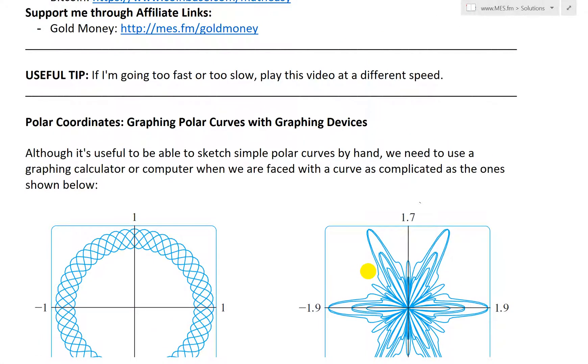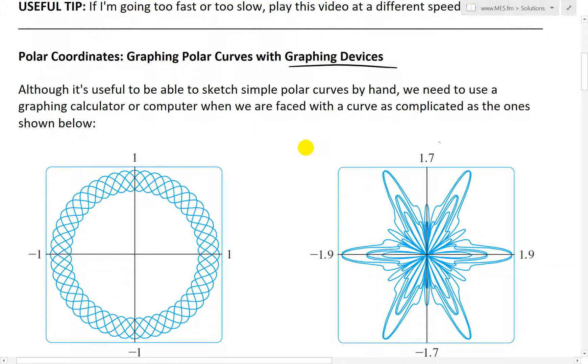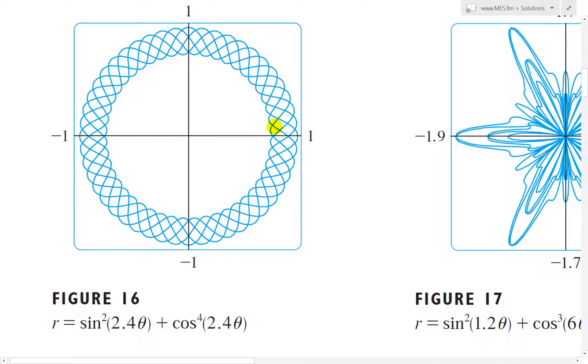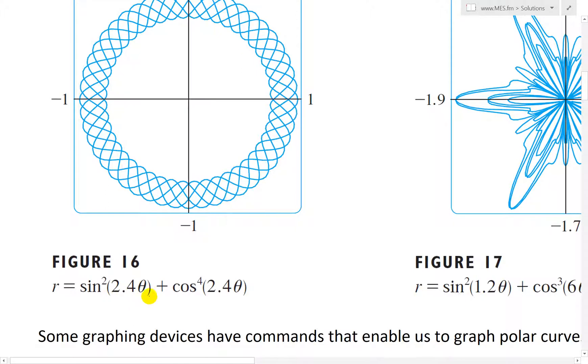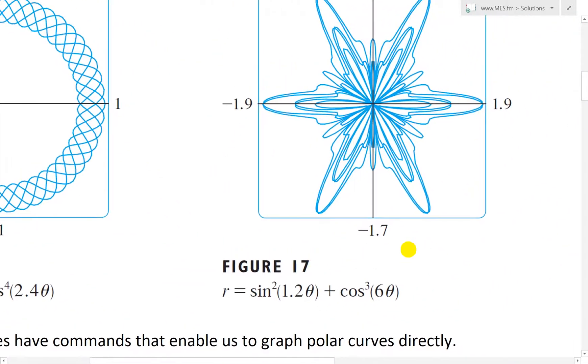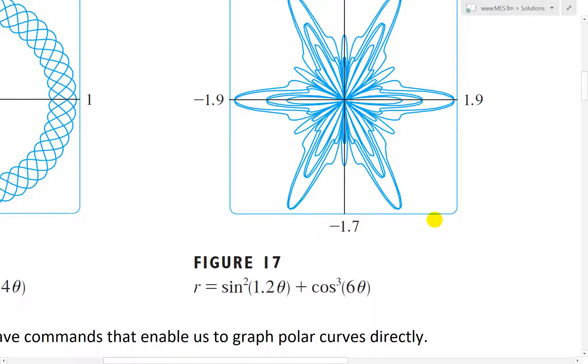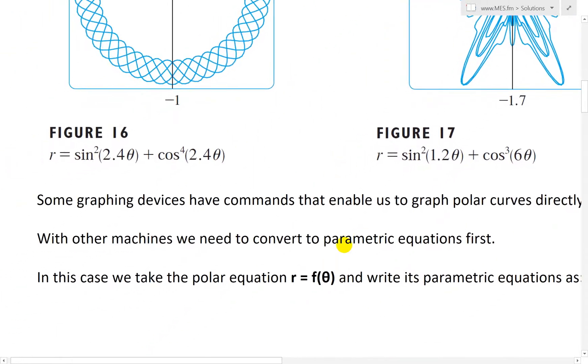Polar coordinates: graphing polar curves with graphing devices. This is a section from my calculus book. Although it's useful to be able to sketch simple polar curves by hand, we need to use a graphing calculator or computer when faced with a curve as complicated as the ones shown below. This ring here goes like a sinusoidal wave but in a loop and a circle. This one is R equals sine squared 2.4 theta plus cosine to the power 4, 2.4 theta. Here's another curve, an amazing star shape. This one's R equals sine squared 1.2 theta plus cosine cubed 6 theta.